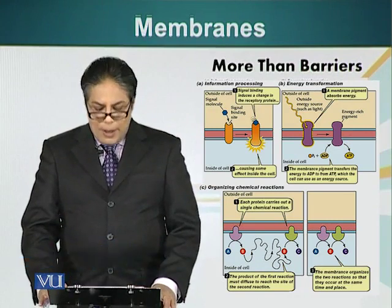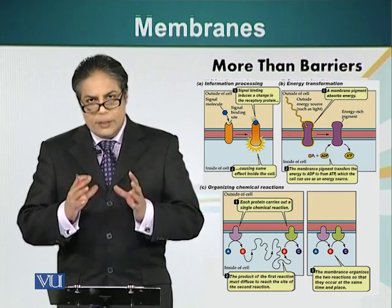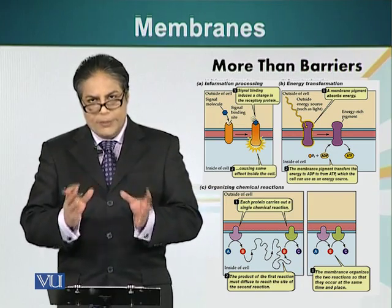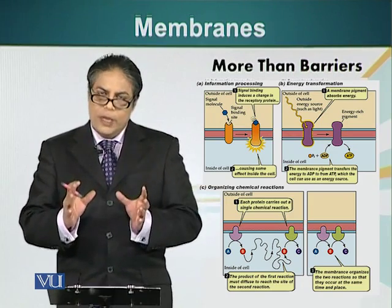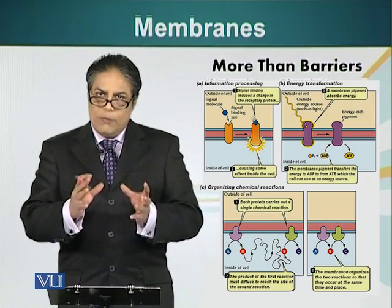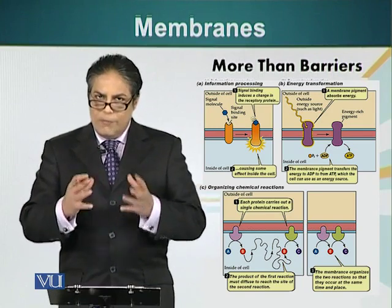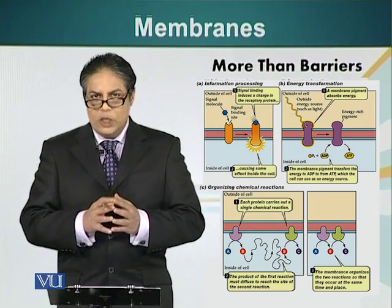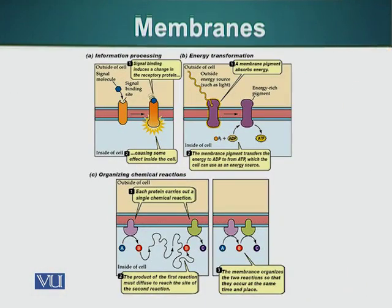Membranes have special proteins on them that serve as receivers of different types of signals, just like antennas placed on rooftops. These membrane proteins are looking for signals, and when they receive a signal, they transmit whatever information they have received to the rest of the cellular machinery. We'll talk about this process in much more detail in later modules.